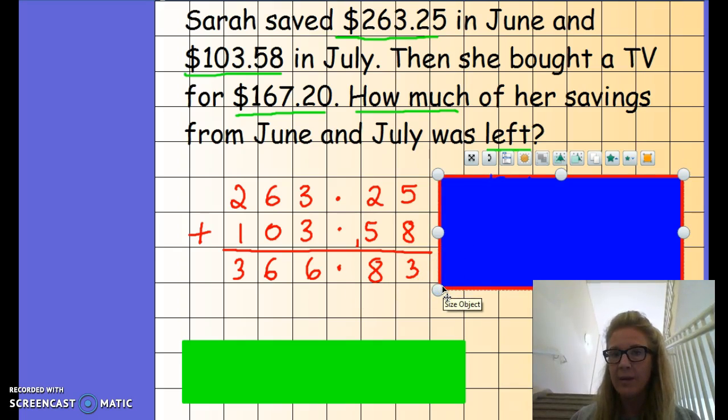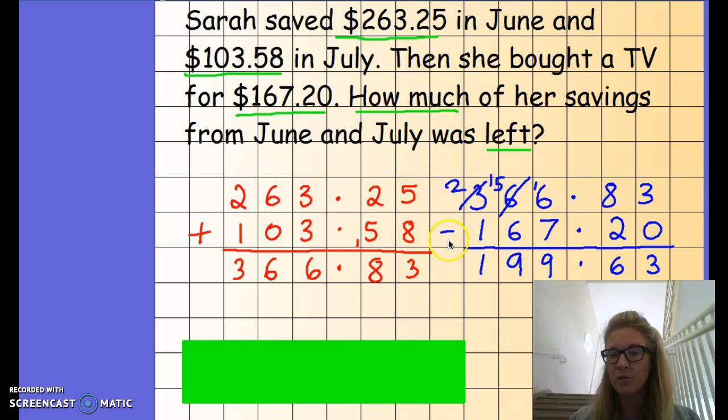The next part of the problem is it is telling us that she bought a TV. So we want to know how much is left. So we then need to use a subtraction. So we would subtract the amount she has saved from the amount the TV cost her.